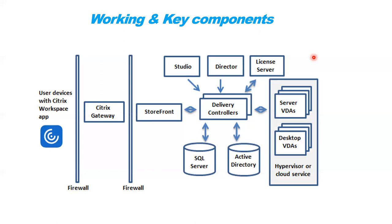All traffic we are getting from outside our network goes through a secure tunnel, and that particular tunnel is known as the Citrix Gateway or firewall. So basically it is a path for network traffic to travel in a secure way. We need some security for our internal network, and that is the only reason why we configure the firewall. Starting from the left-hand side of your screen, the first component is the end-user device — it could be a laptop, desktop, or mobile phone.